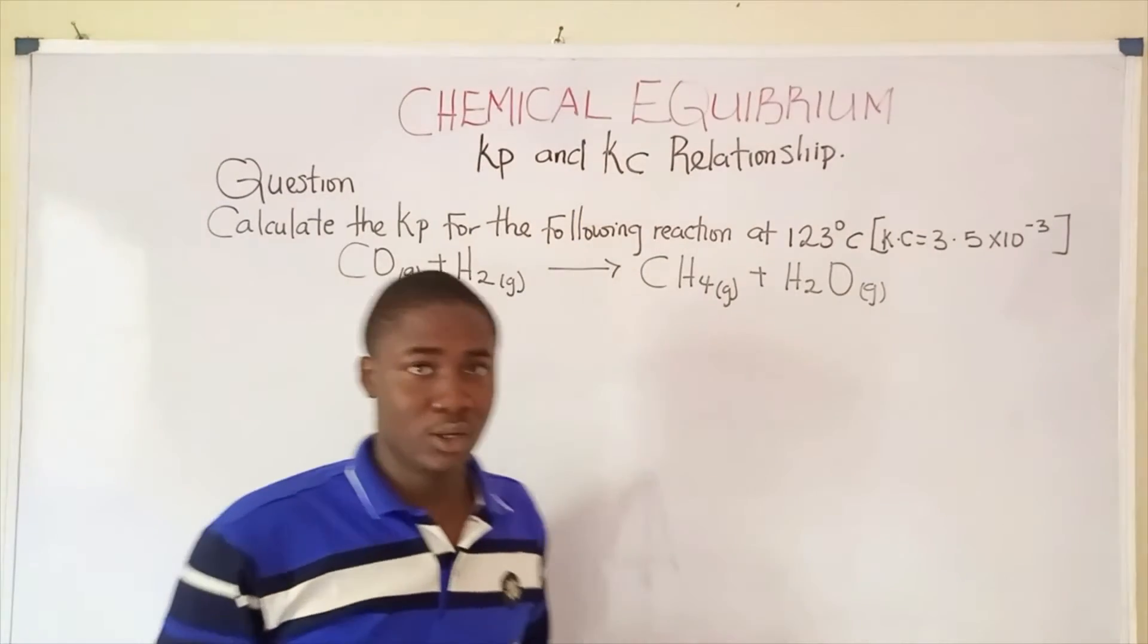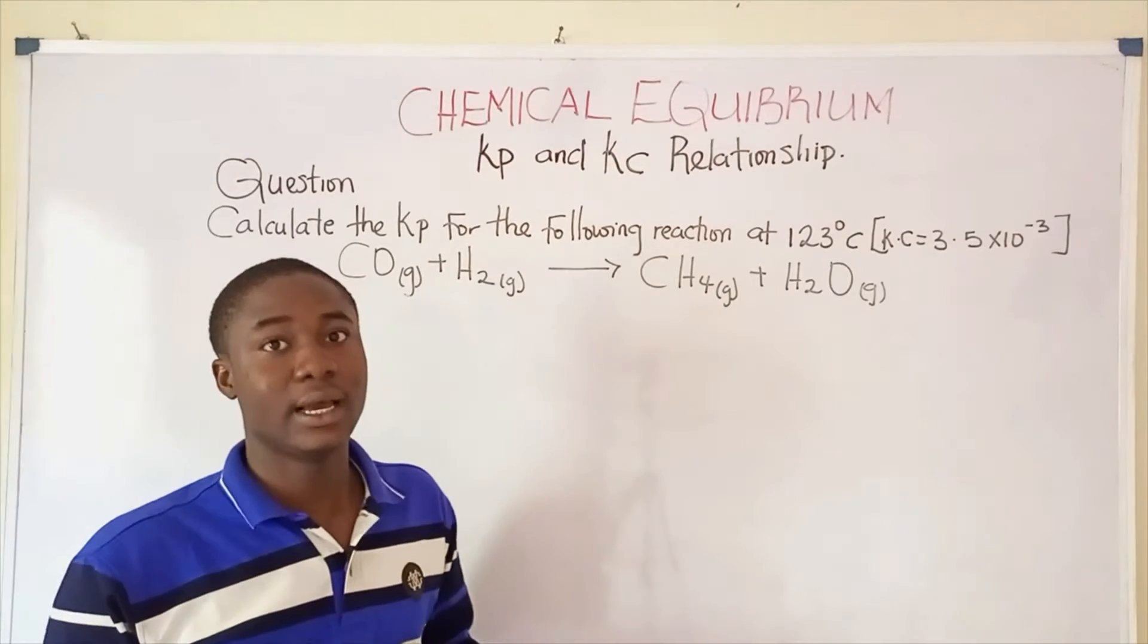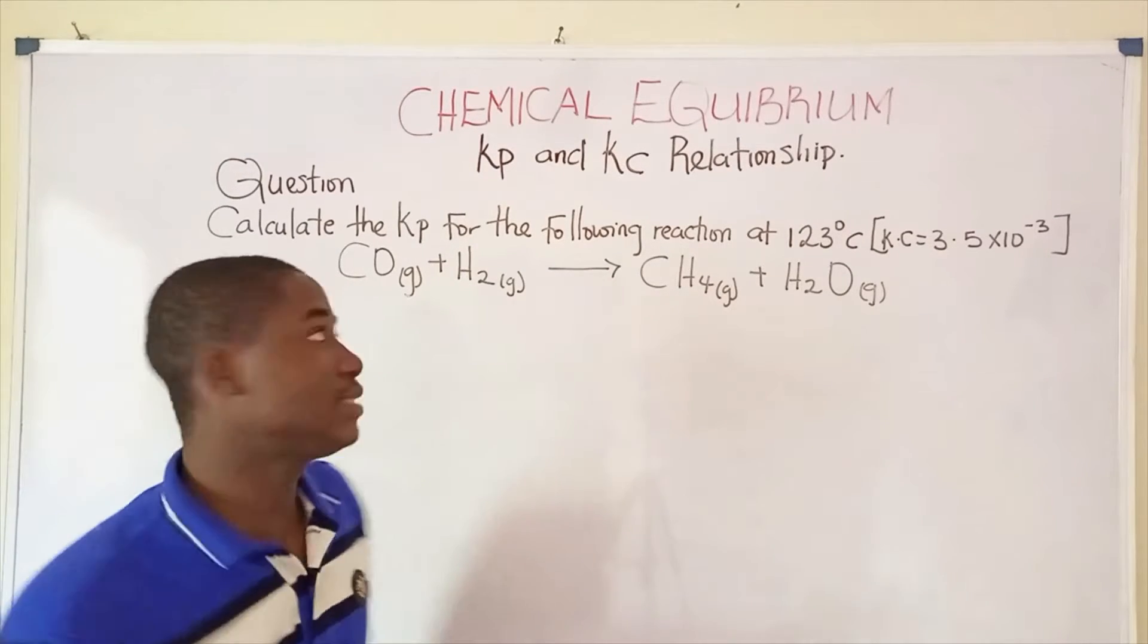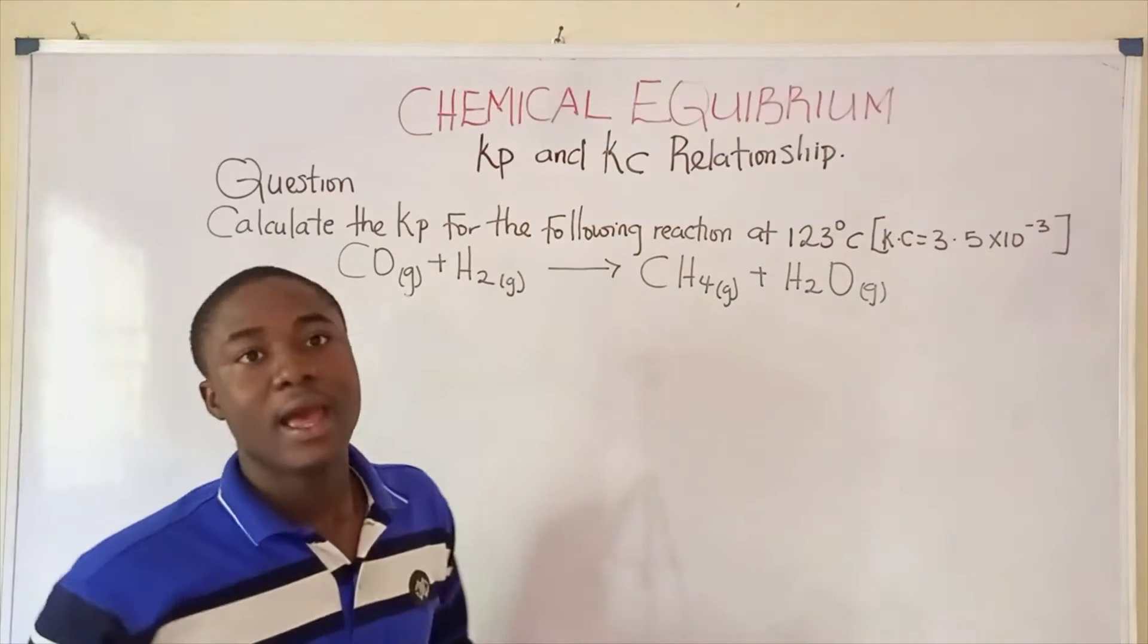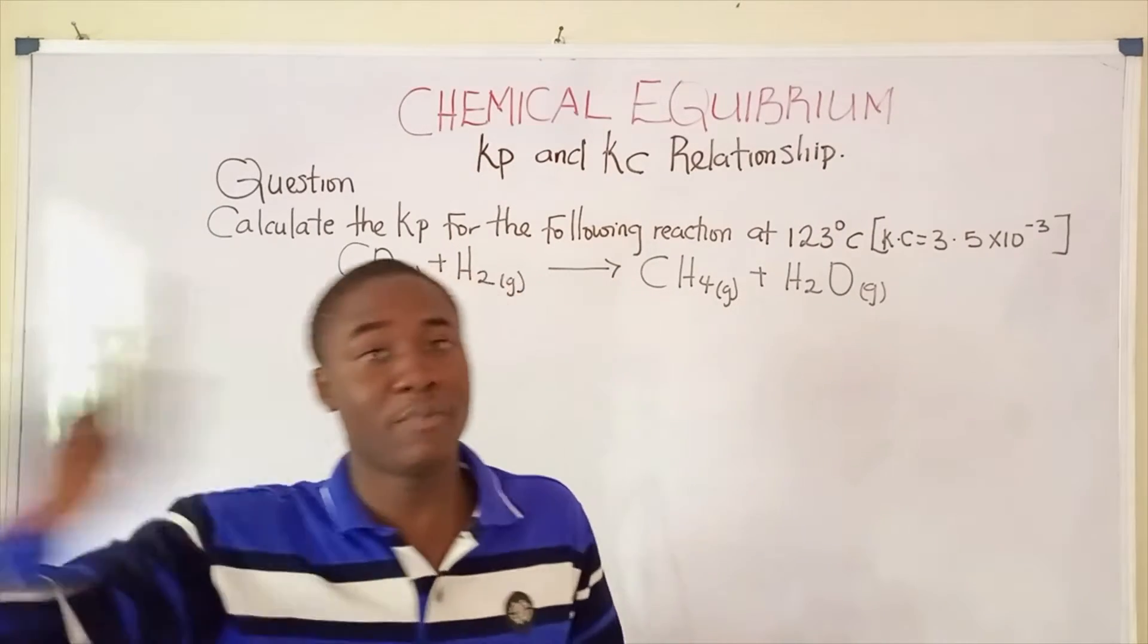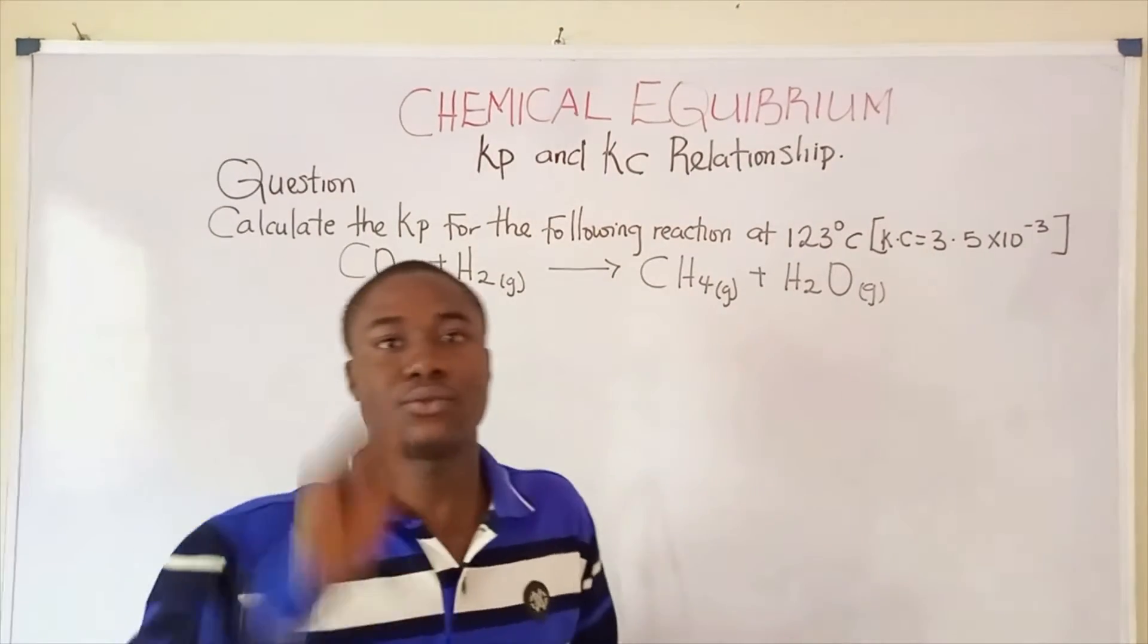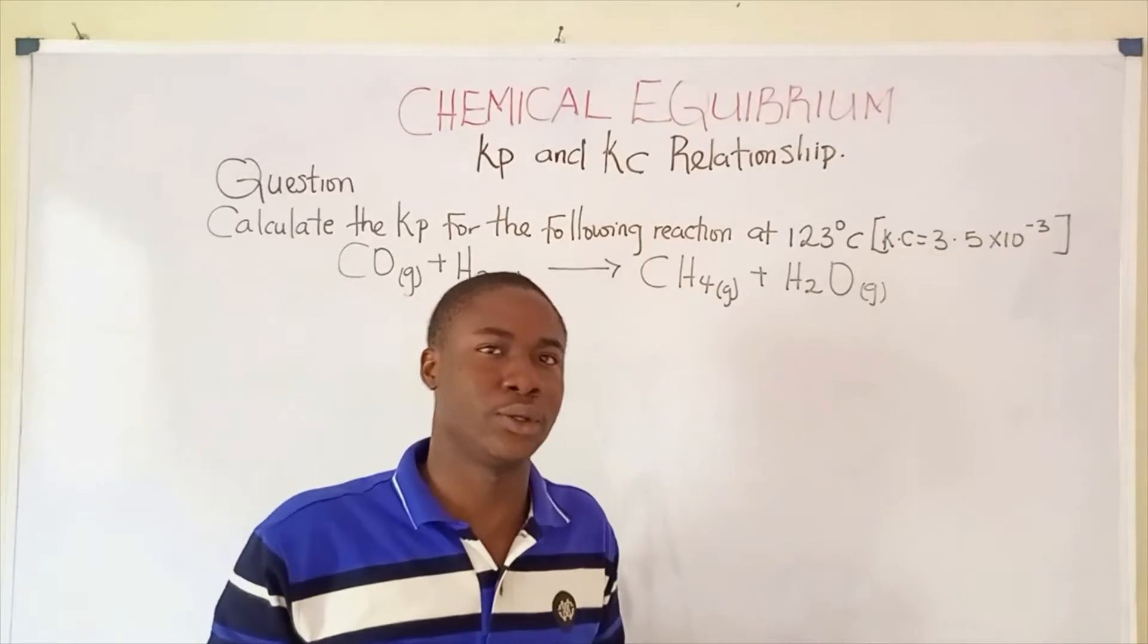I'll be focusing on the relationship between Kp and Kc of a reaction. First thing first, what is Kp? Kp is equilibrium constant written in terms of partial pressure, while Kc is equilibrium constant written in terms of concentration.